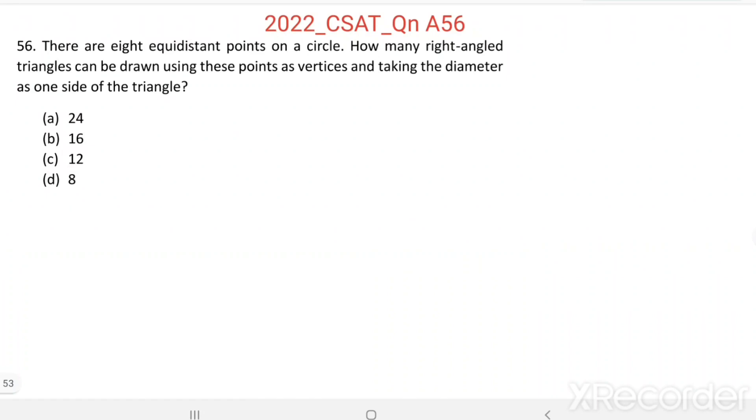Question number 56. There are 8 equidistant points on a circle. How many right-angled triangles can be drawn using these points as vertices and taking the diameter as one side of the triangle?